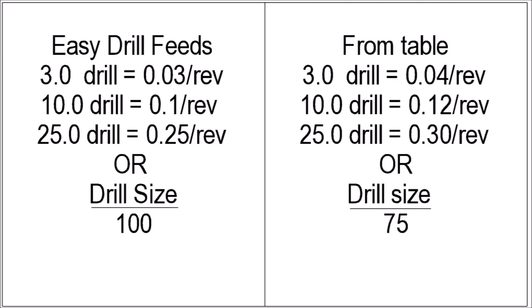A friend once told me that if I remembered that a 10mm drill was 0.1 per rev and a 20mm drill was 0.2 per rev, I'd be fairly safe with my feeds. The left side of this diagram has some of those feeds listed — it basically works out to drill size over 100. On the right side of the diagram are figures from the table I've put up before, and they basically work out to around drill size over 75. Hope this is useful for someone.